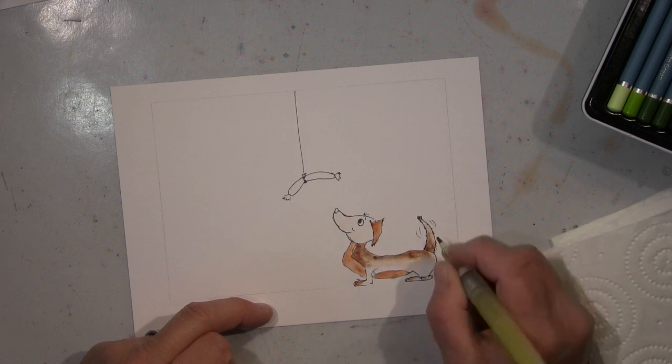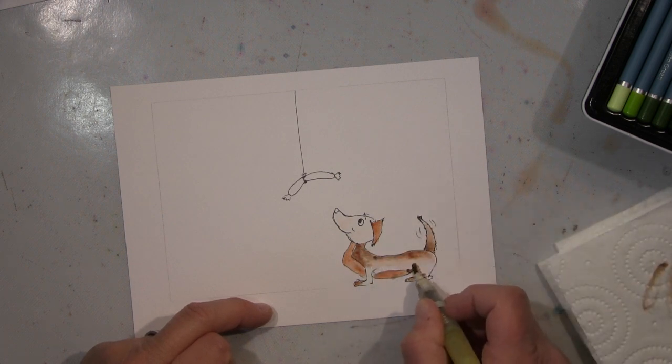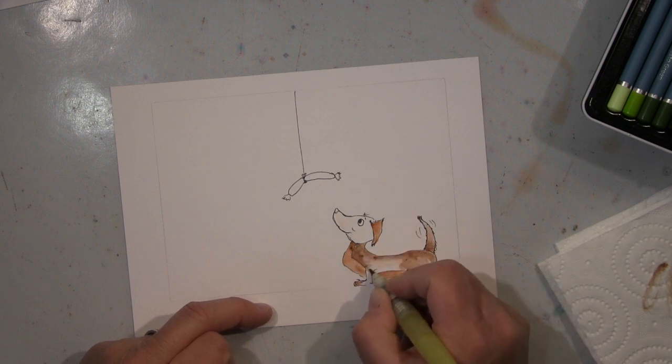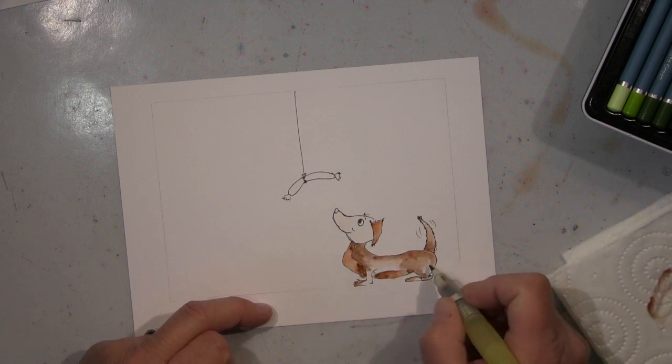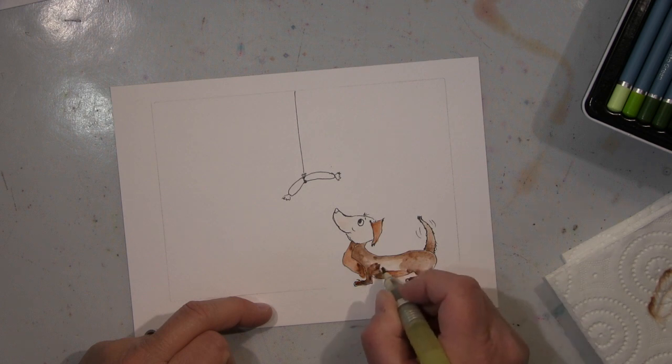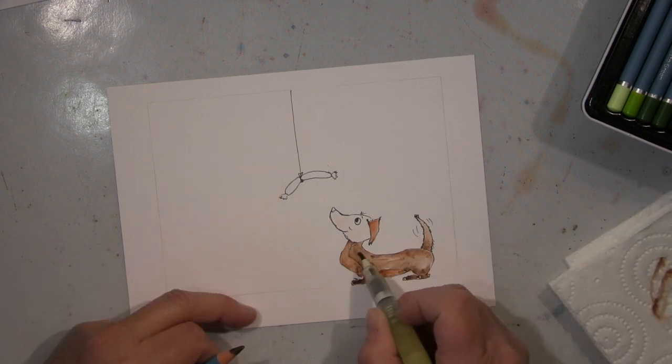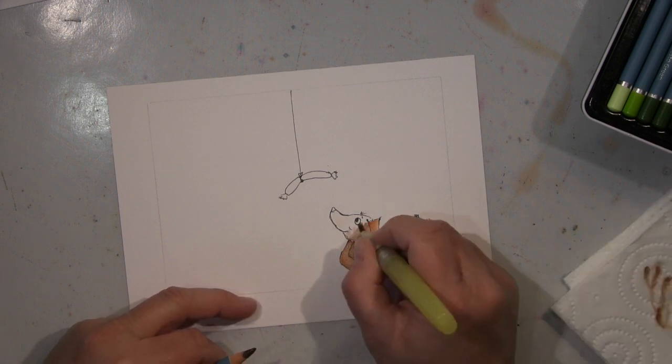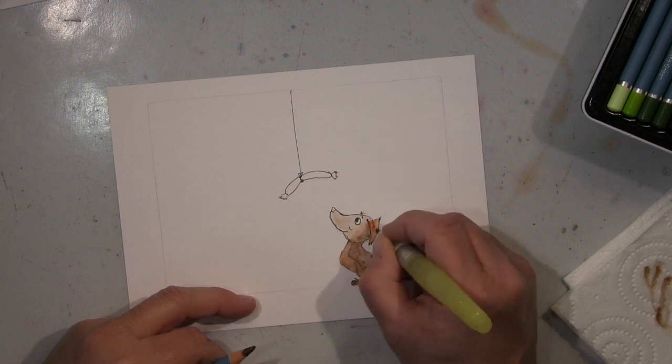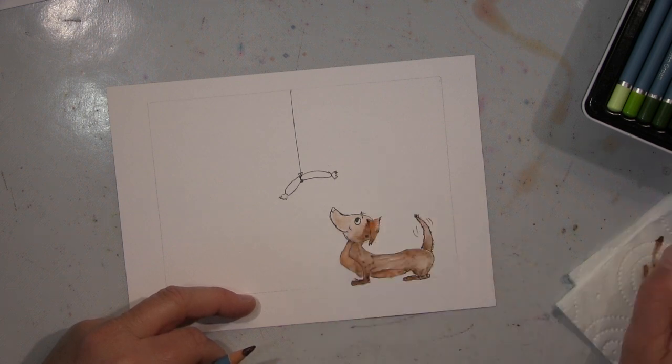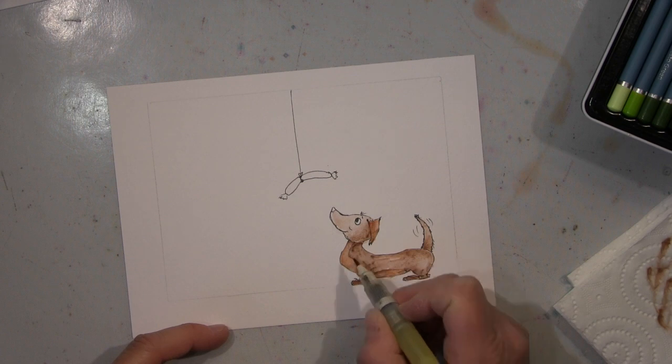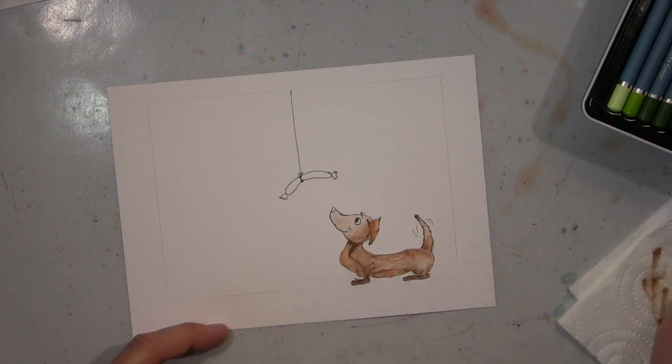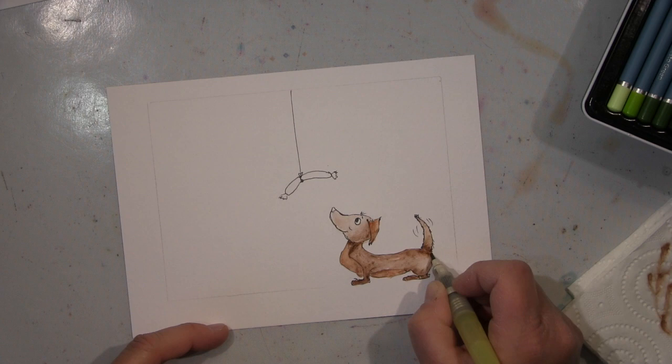Dafür nehme ich meine Spectrum Noir Aquablends. Das sind Aquarellstifte, die mir auch wieder sehr helfen. Mit denen funktioniert das Verblenden und Schattieren einfach wesentlich besser, und die Methode, die ich hier benutze, ist einfach mit dem Wassertankpinsel die Farbe aufzunehmen vom Stift.